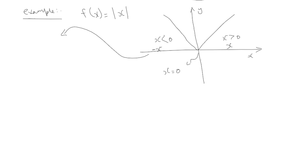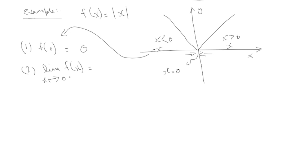To establish that continuity holds at x equals 0: first, f(0) exists — we plug in 0 and get 0. Second, the limit as x approaches 0 must exist. Considering the left-hand and right-hand limits, approaching from both sides gives the same answer, so the limit exists. Third, we verify the limit equals the function value, and indeed both equal 0. Continuity is established.